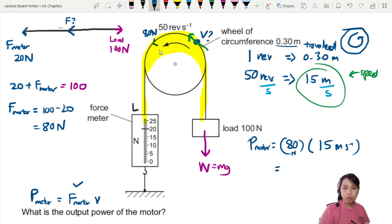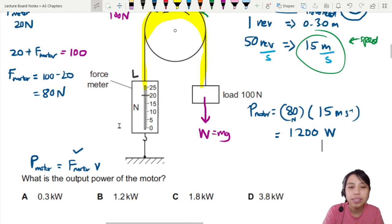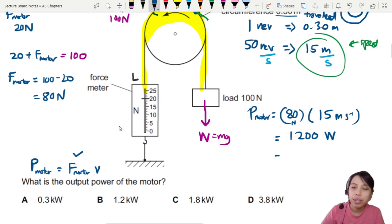Let's take the calculator: 80 times 15 gives us 1200 watts. In kilowatts, that's 1.2 times 10 to the 3 watts, and 10 to the 3 is kilo, so 1.2 kilowatts.